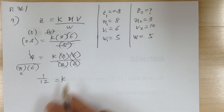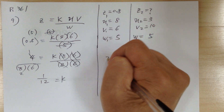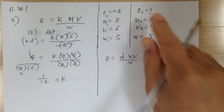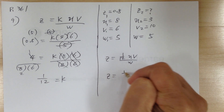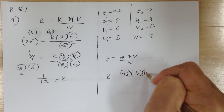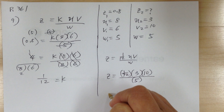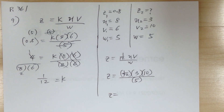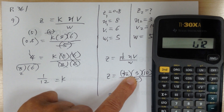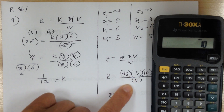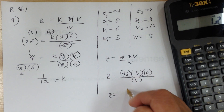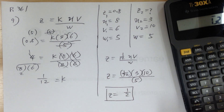Once I find k equals 1 over 12, update the equation: z equals (1/12) times u times v over w. Now use that to solve: z equals (1/12) times 3 times 10 over 5. Using the calculator — 1 over 12, times 3, times 10, equals, divided by 5 — equals one half, or 0.5.